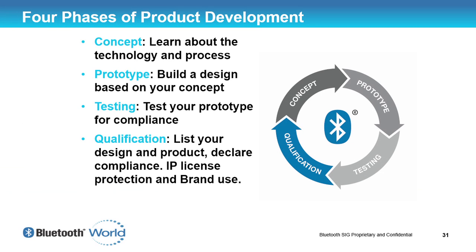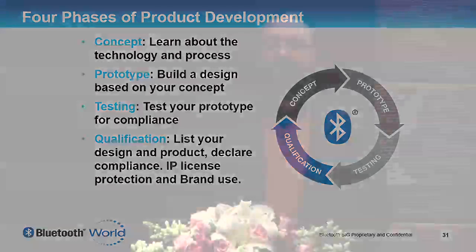There are four basic phases for product development. The first one is you've got an idea, a concept, and at that point you're going to come to a conference like this, learning about the technology, taking small steps to understanding what you can do — discovering devices, working out what those devices do, understanding services and characteristics, service specifications and profile specifications. You can do the profiles on your phone platform and services on your little device that you're going to build and sell — and make yourself a billionaire. Then you're going to have to prototype it.